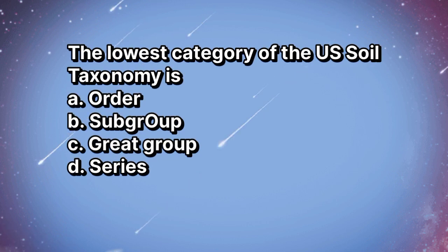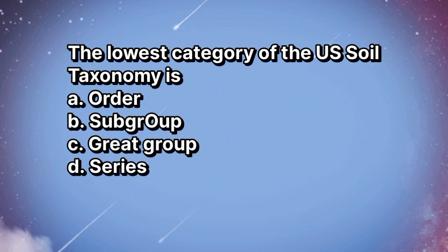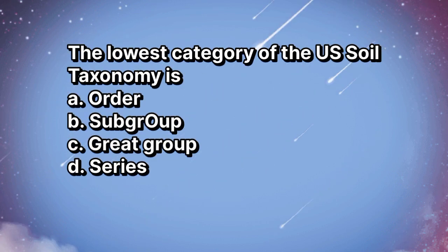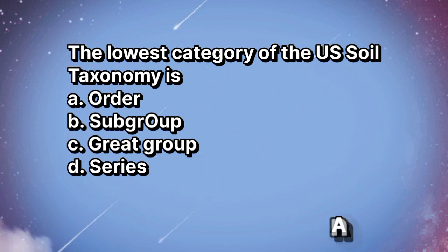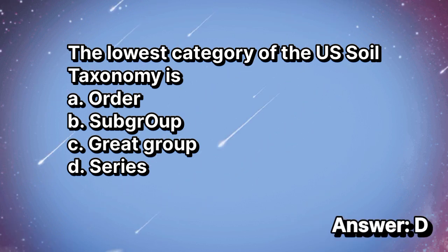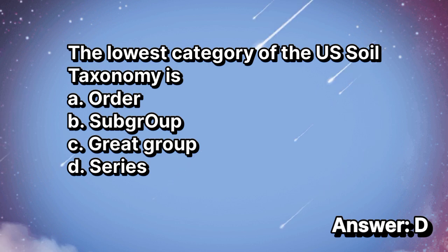The lowest category of the US soil taxonomy is: A. Order. B. Subgroup. C. Great Group. D. Series. The answer is letter D.